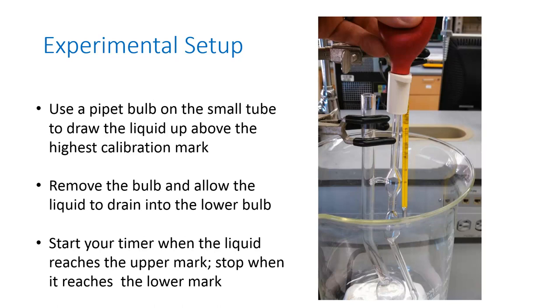Once you're ready to begin your experiment, you're going to take a pipette bulb, the same one you used for the pipette, and squeeze it and put it on the small tube of the viscometer, and use that to draw the solution up into the top bulb that you see there.